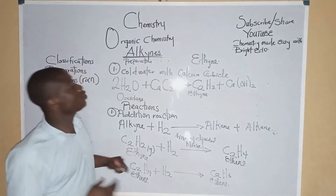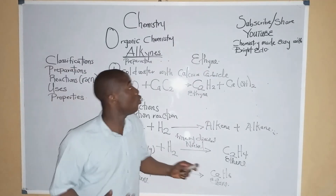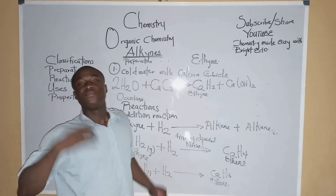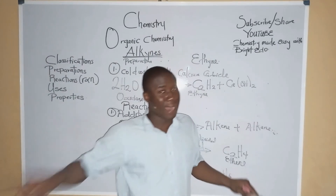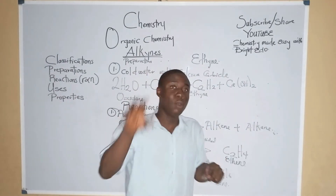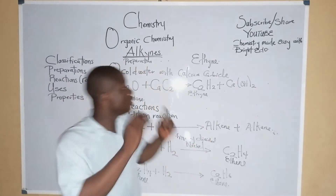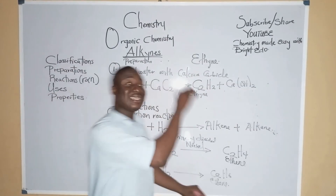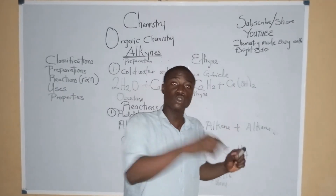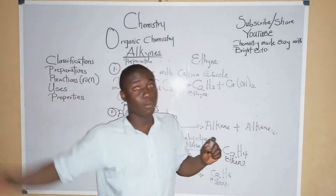Now let's quickly talk about the uses of alkynes, focusing on the first member, acetylene. Acetylene is used as fuel in lamps by miners. Acetylene also burns with an oxyacetylene blue flame which is used to cut metals. Acetylene is also a major source of chloroprene, which is a monomer unit of artificial rubber called neoprene.